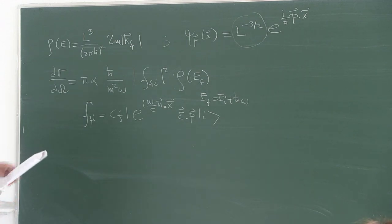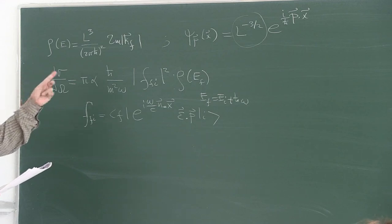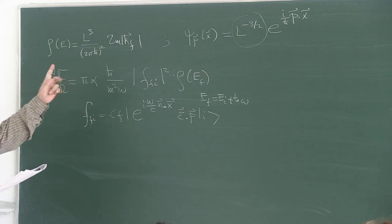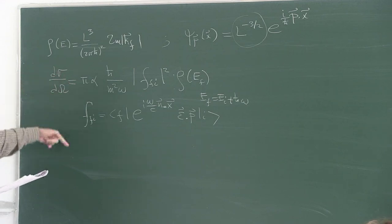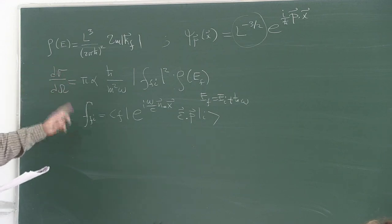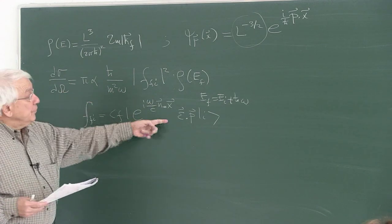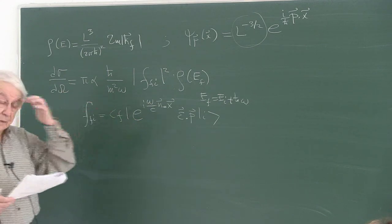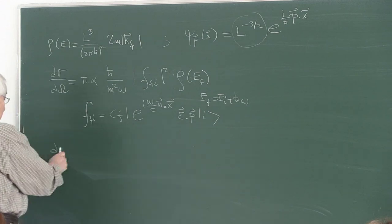Let me remind you what that matrix element was. The amplitude f from initial to final: the initial state is a quantum electronic state in the atom; f is the free particle final state. The matrix element is f times e to the i omega over c times n dot x times epsilon dot p times i, and this is the matrix element we are going to deal with.